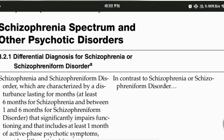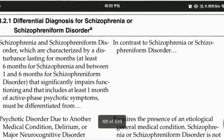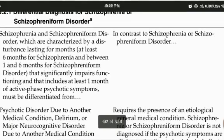For Differential Diagnosis, first we consider Schizophrenia Spectrum and Other Psychotic Disorders. We talk about Schizophrenia and Schizophreniform Disorder: their characteristics are the same, but in Schizophrenia the disturbance lasts at least 6 months, while in Schizophreniform Disorder the duration is 1 to 6 months — a minimum of 1 month and a maximum of less than 6 months.